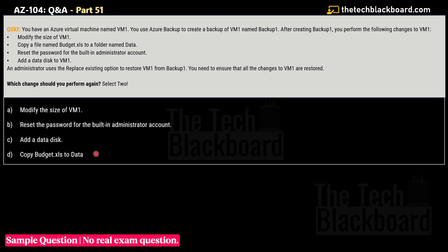To answer this, understand the 'Replace Existing' restore option. It replaces the entire VM with the backup snapshot, restoring OS disks and backup disks. However, changes to VM properties such as size, admin password, and file system content within existing disks are retained if captured in the restore snapshot. Data disks added after the backup was created are not included and must be re-added manually.